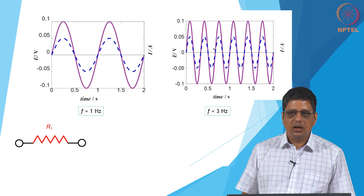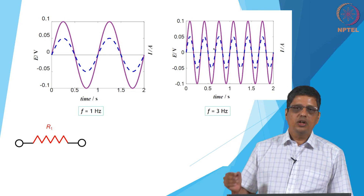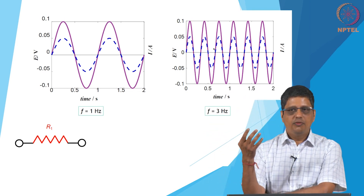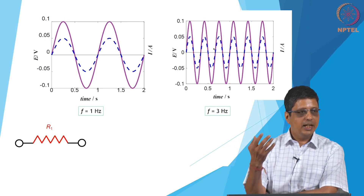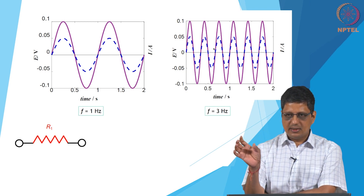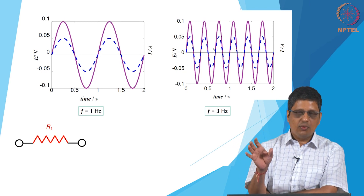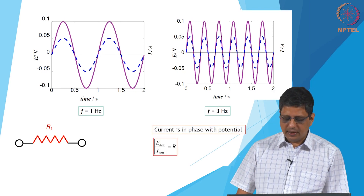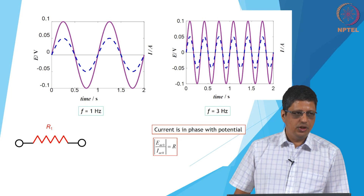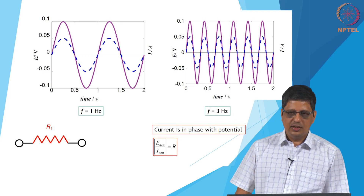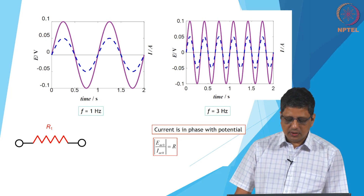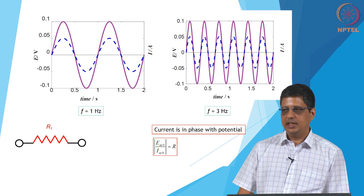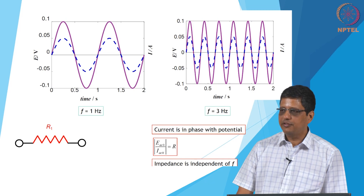We also want to see what happens when you have a capacitor and when you have an inductor — these are electrical elements. Later, we will see what happens with an electrochemical reaction. For the resistor, current is in phase with potential and you can get the magnitude as E_AC0 divided by I_AC0, which gives you the resistance. This is also called the impedance of the resistor, and it is independent of frequency.